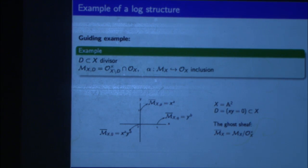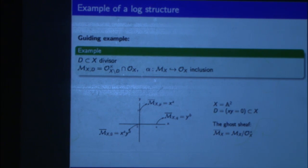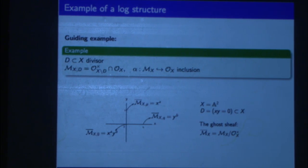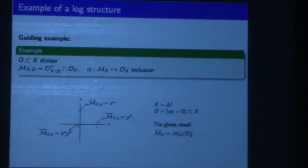And if you look at the sheaf of regular functions that have zeros on your divisor, this gives a standard log structure and you just look at inclusion. For instance, if you consider A2 with divisor xy equal to 0.